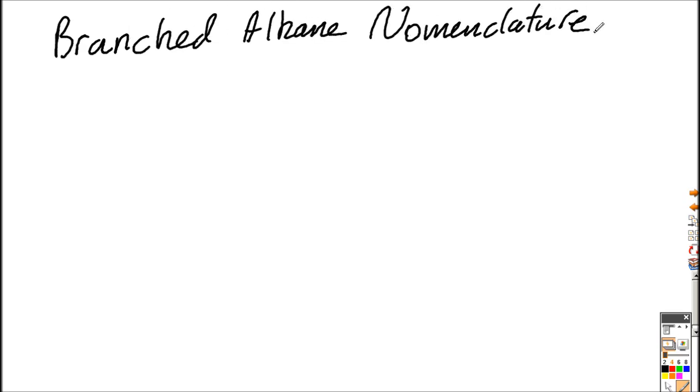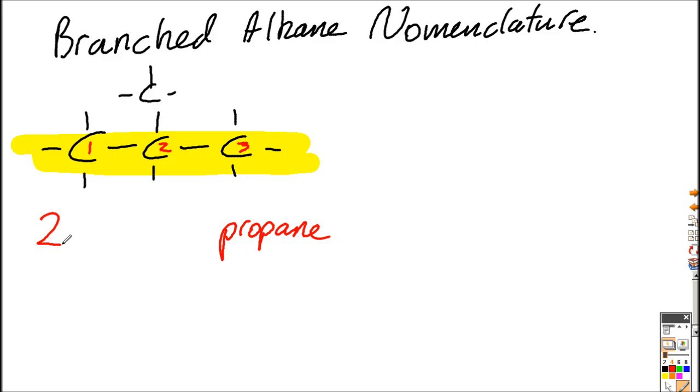So, branched alkane nomenclature. This is the simplest branched alkane. The first thing you have to do is find out what's the longest chain. The longest chain in this case is three carbons in a row, and three carbons in a row essentially looks like propane. I'm going to number them, and then if you look on the second carbon, there's a methyl group. So this is 2-methylpropane.